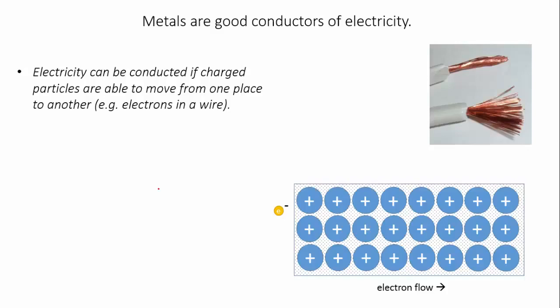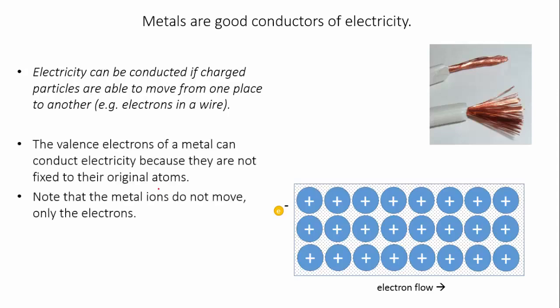For electricity to be conducted through a material, charged particles must move from one place to another. In a metal, the delocalized valence electrons in the metal lattice are able to move through the lattice, and this allows metals to conduct electricity.